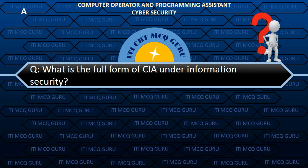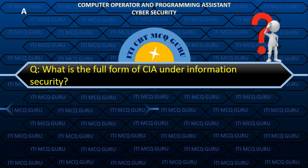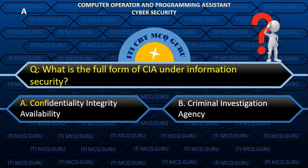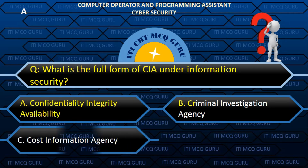What is the full form of CIA under Information Security? Answer: A. Confidentiality, Integrity, Availability.